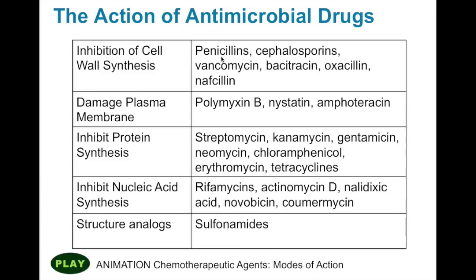This category is inhibition of cell wall synthesis. Not only is penicillin in this category, but we have cephalosporins, vancomycin, bacitracin, oxacillin, and nafcillin. Down here we have damage to the plasma membrane. If you damage the plasma membrane directly, then you're going to also lyse the cell. In this category are polymyxin B, nystatin, and amphotericin.